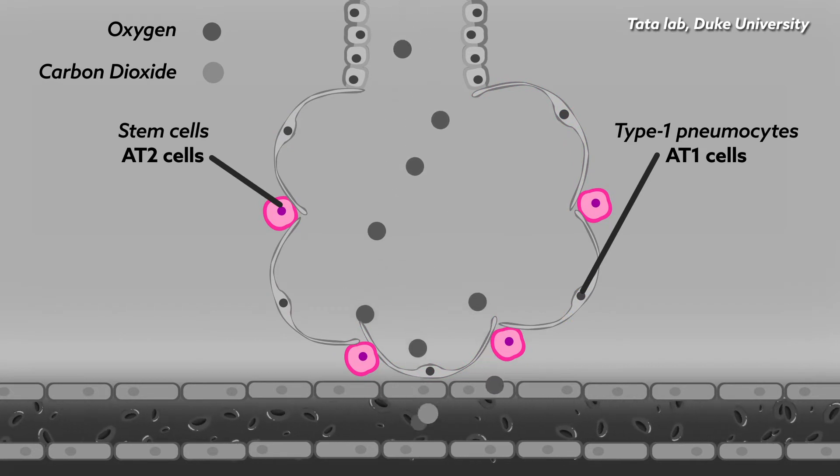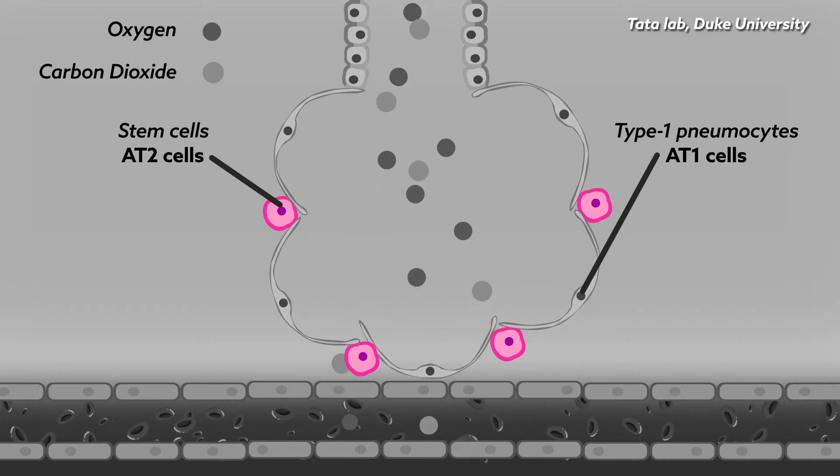that can replace damaged AT1 cells. But exactly how these cube-shaped AT2 cells generate large, flat AT1 cells has remained something of a mystery.